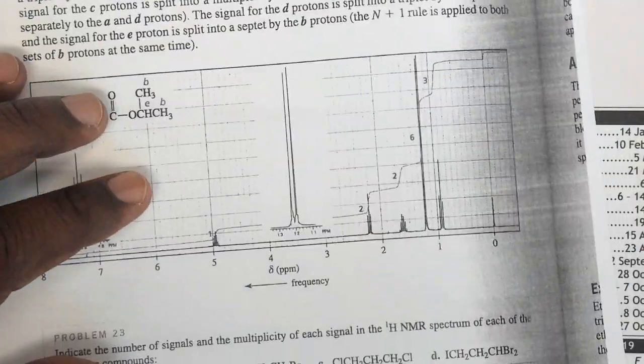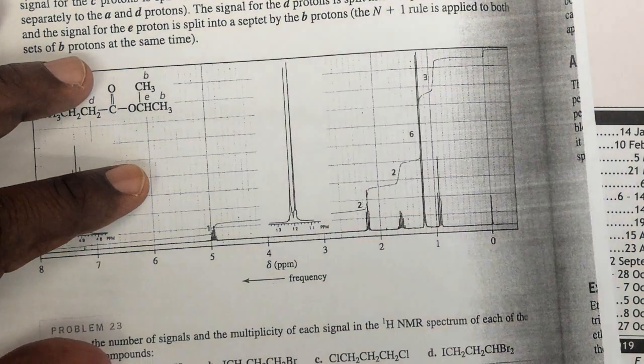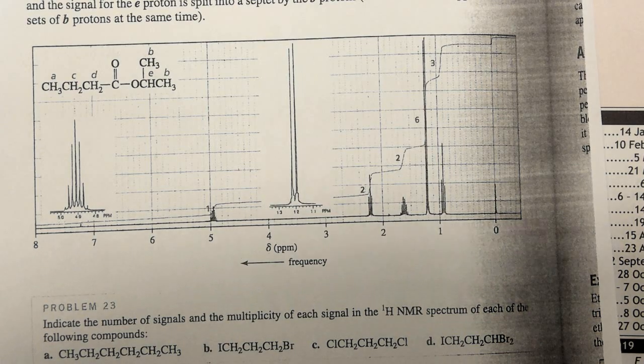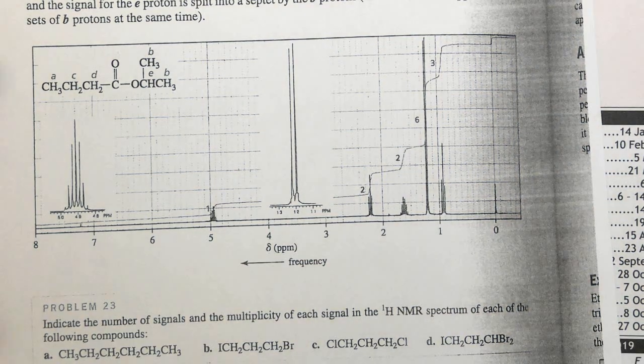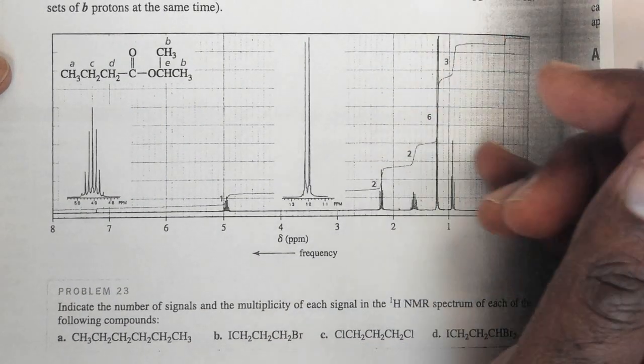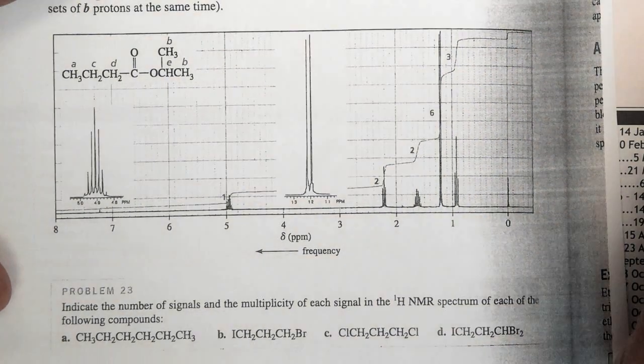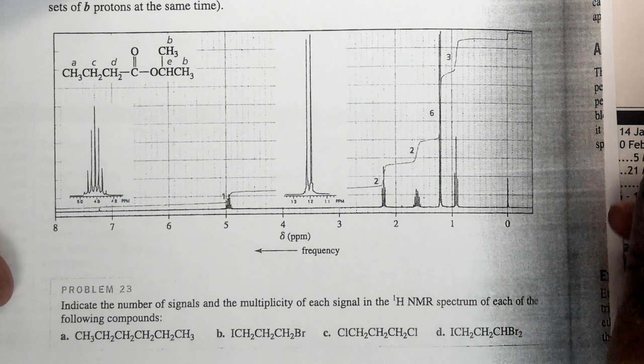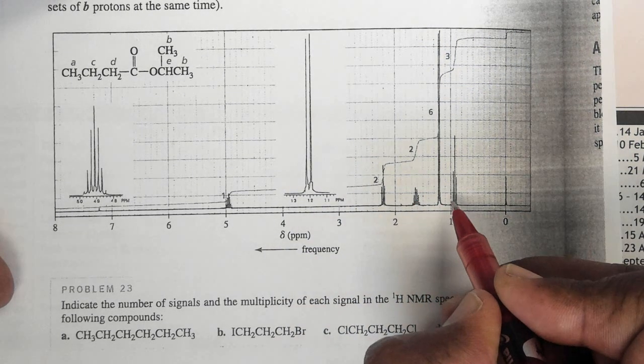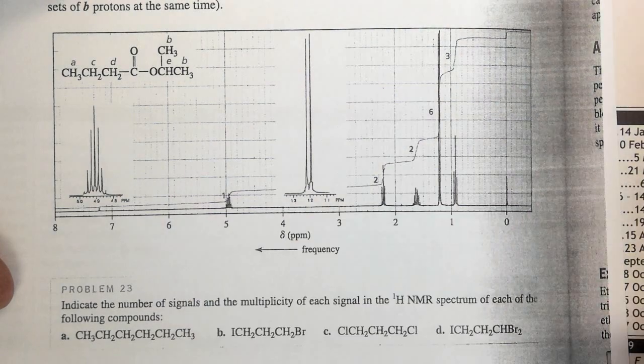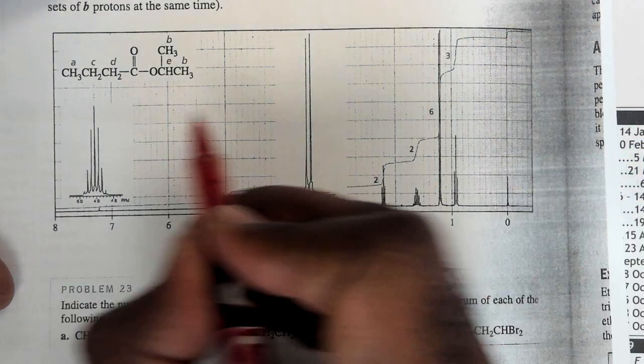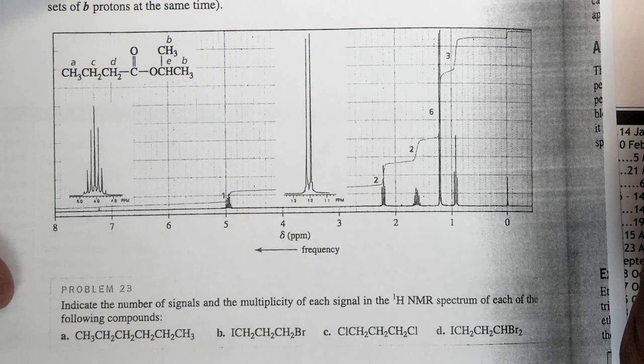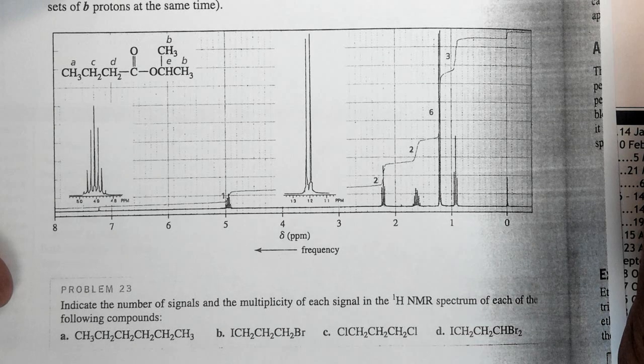Moving on to example number two. I've got this particular spectrum, and this is a little bit more complex. If I look at this particular spectrum and count my resonances, I've got 1, 2, 3, 4, and 5 proton resonances. This molecule here is labeled A, B, C, D, and E. For each of the proton resonances, I need to see which is which.